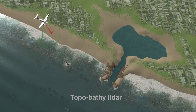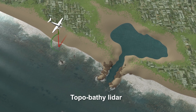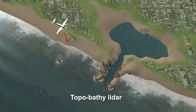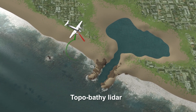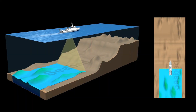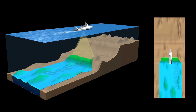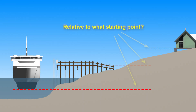NOAA Airborne Topobathy LIDAR uses laser technology to provide accurate height information for land surfaces, as well as shallow water depths and objects such as houses and vegetation. NOAA Hydrographic Survey ships use sound waves in the form of sonar to measure water depths. In order to align elevation data from various sources, we need to pick a common starting point.